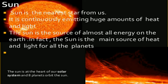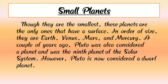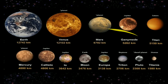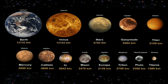Now, small planets. Small planets are the smallest and are the only ones that have a surface. In order of size, they are Earth, Venus, Mars, and Mercury. A couple of years ago, Pluto was also considered a planet — it was considered the 9th planet of the solar system. However, Pluto is now considered a dwarf planet. The small planets include Pluto, Europa, Neptune, Jupiter, and Uranus.